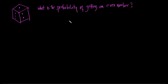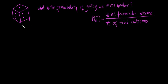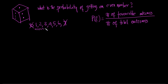When I roll a dice, what can happen? I will get either a 1, 2, 3, 4, 5, or 6 — I can never get a 7 or a 0. These are the total outcomes. So the total number of outcomes when rolling a dice is 6. Now let's calculate the probability of getting an even number.